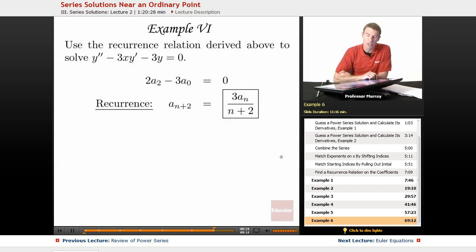In Example 6, we're going to use the recurrence relation derived in Example 5 to actually solve the differential equation. We ended up with 2A2 minus 3A0 equals 0, and then we have this recurrence relation. All of this is from Example 5. They aren't supposed to be a big mystery, but we definitely aren't working them out right now.